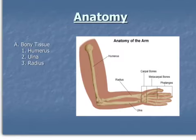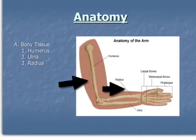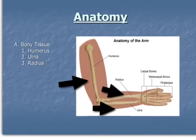Today we'll be talking about the elbow and its structures. We have three major structures when it comes to bones of the upper arm. The first one is the humerus, the second one is the radius, and the third one is the ulna. In anatomic position, the radius is on the lateral side and the ulna is on the medial side.